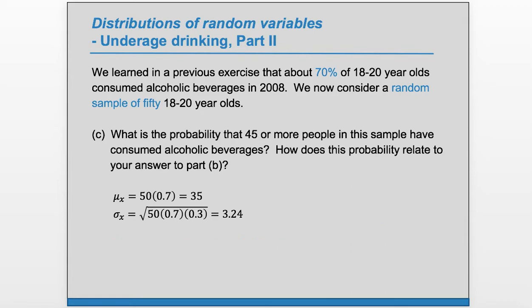Part C, what is the probability that 45 or more people in this sample have consumed alcoholic beverages? How does this probability relate to your answer in Part B? So we want the probability that we get 45 or more. And because this is a binomial distribution, we could use the binomial formula. We'd have to use the binomial formula for 45, 46, 47, 48, 49, 50.